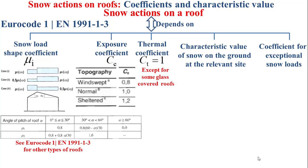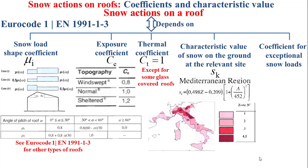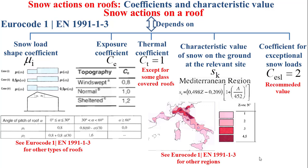The characteristic value of snow on the ground at the relevant site is denoted by SK and depends on the region. For example, for the Mediterranean region, SK is determined based on the formula shown in this slide, where Z refers to the zone number as depicted in the figure, and A refers to the site altitude above sea level. For information about other regions, see EuroCode 1 standards. Finally, the coefficient for exceptional snow loads is denoted by CESL and equals 2 as a recommended value.